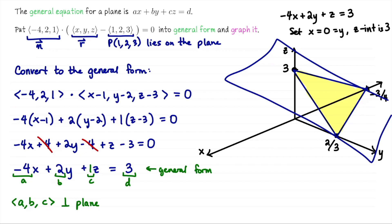That's one nice thing about the general equation — it makes it a little bit easier to find the intercepts on the axes compared to the vector equation. Another nice feature of the general equation is that it removes some ambiguity. If I tell you that negative 4, 2, 1 is orthogonal to the plane, the left-hand side is negative 4x plus 2y plus z, and when you solve for the right-hand side, everyone who solves this correctly would write down 3. However, in the vector equation there are infinitely many points on the plane to choose from, so the general form makes it easier to quickly confirm whether two people have found the same plane.